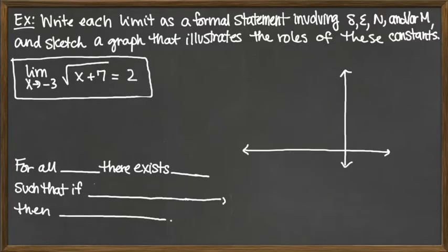In this video, we're going to do two examples where for each example we're given a mathematical limit statement and we want to translate that into a formal limit statement that involves delta, epsilon, N, and/or M, depending on the context. In addition to the statement, we're going to sketch a graph that would illustrate the roles of the constants we're using in the formal statement of the limit.